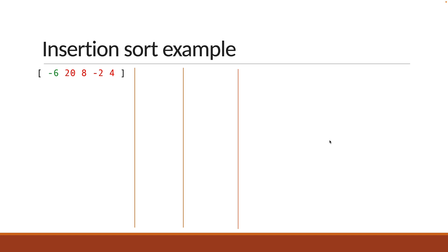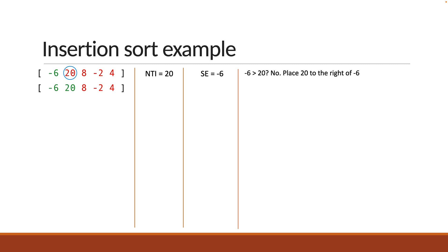You begin by assuming the first element in the array is already sorted. The remaining four elements are unsorted. You start at index one, which is the first unsorted element. Let's store it in a variable called number to insert, or NTI for short. You compare it with the sorted elements on its left. We have one sorted element which is minus six, referred to as SE. We check if the sorted element is greater than the number to insert. Is minus six greater than 20? No. In that case, place 20 to the right of minus six — there is no change as 20 is already to the right of minus six. Minus six and 20 now form the sorted part of the array.